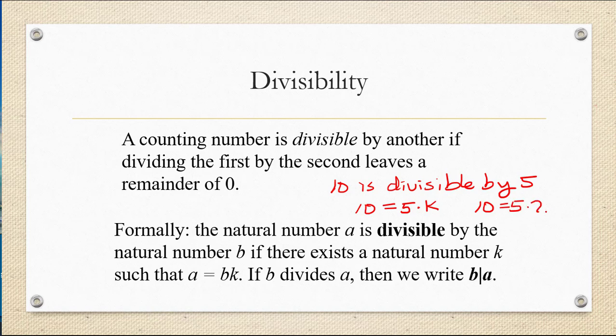10 is divisible by 5 because 10 can be written as 5 times some number k. In this case, the number k would be 2, but it doesn't really matter what k is. This is the same reason that 5 divides into 10 twice. So as long as you can find that number k, 10 is divisible by 5.